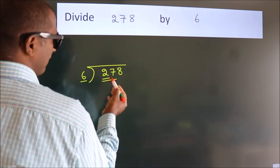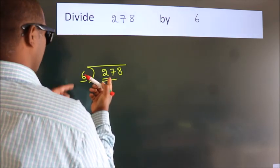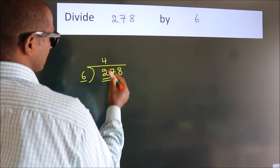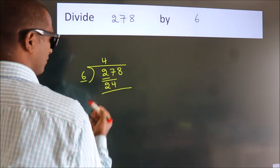should take 2 numbers: 27. A number close to 27 in the 6 table is 6 times 4, which is 24. Now we should